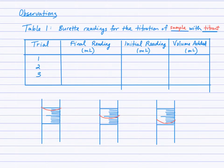The observations table is set up with a title — burette readings for the titration — identifying the sample with its concentration and the titrant. We typically run three trials, although the first trial will be rough because we have no idea how much titrant is actually going to be required. So you need to know how to read the burette in order to complete the burette readings.